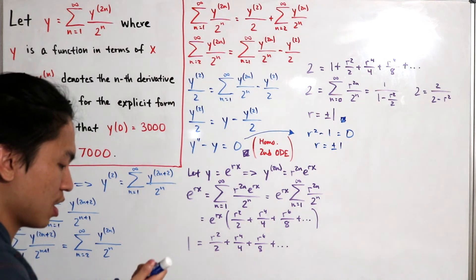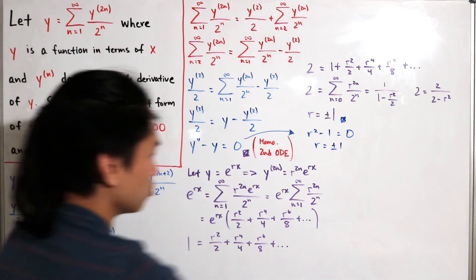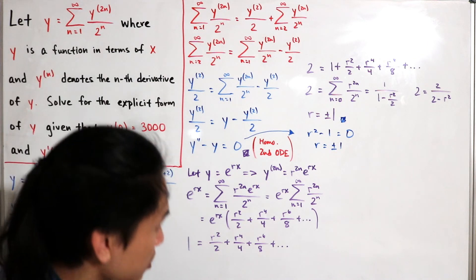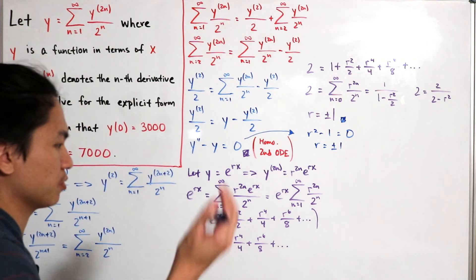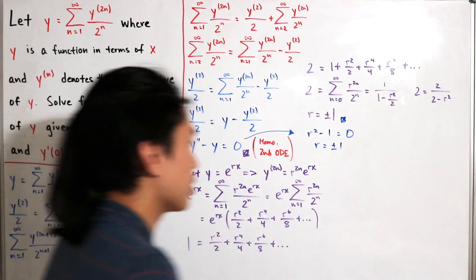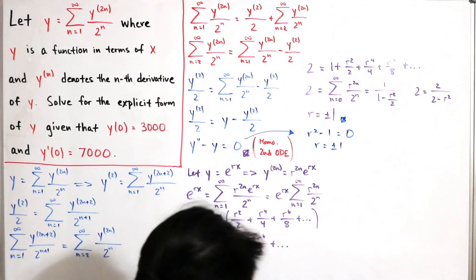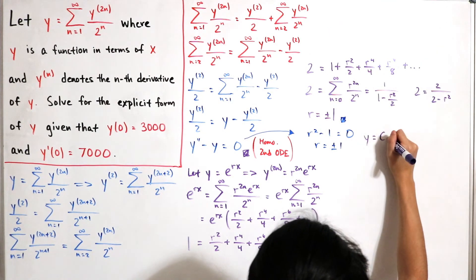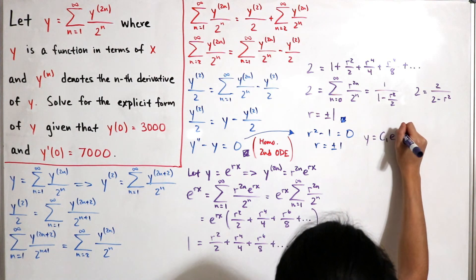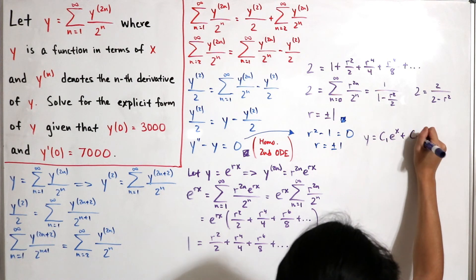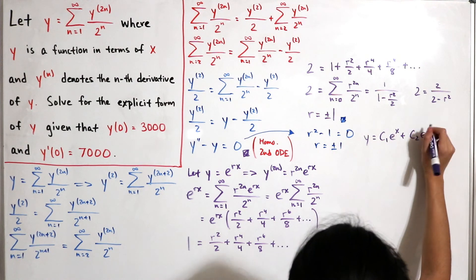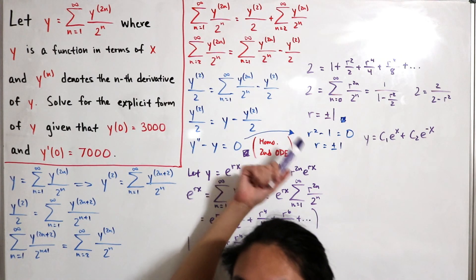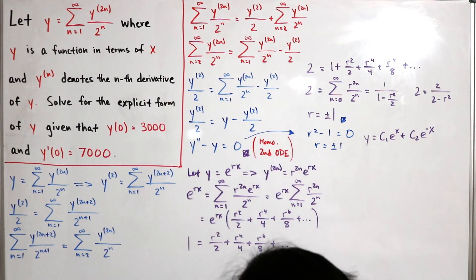Both methods confirm the characteristic roots r = ±1. The general solution is therefore y = C1*e^x + C2*e^(-x), where C1 and C2 are constants to be determined from the initial conditions.